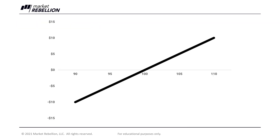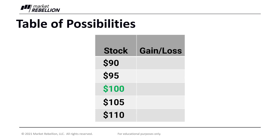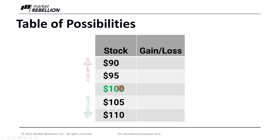Here's what shares of long stock looks like in a picture. If you bought 100 shares of stock at $100 a share, this is what your risk graph looks like. To understand how to read it, it helps to understand how it was created. So let's do one by hand by creating what's called a table of possibilities. You start with the current stock price, then explore what's going to happen if the stock falls below that price — say down to 90 or 95 — or if it rises above, maybe to 105 or 110. It doesn't matter how big we make this list as long as we have some stock prices below and some above the current price.